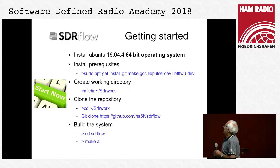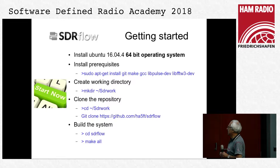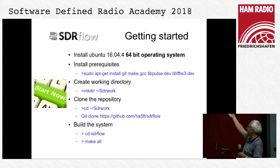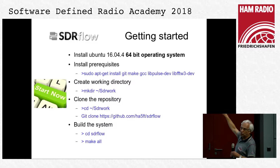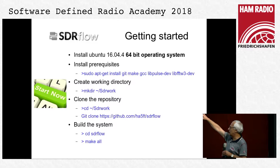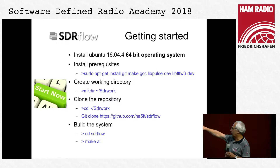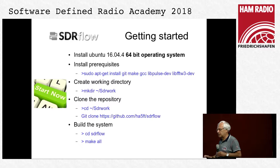To get started, you need — or it is recommended to have — an Ubuntu 64-bit operating system. You should install some prerequisites: git, make, gcc, and the development versions of two libraries. For demo purposes, I use PulseAudio and libfftw3. After that, create a working directory, clone the repository from GitHub, go to the sdr4 directory, and with the 'make all' command you can build the whole system.